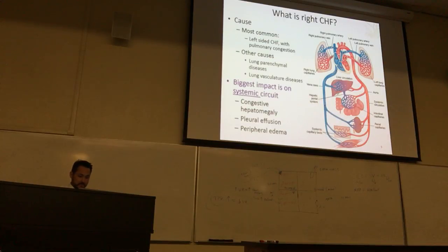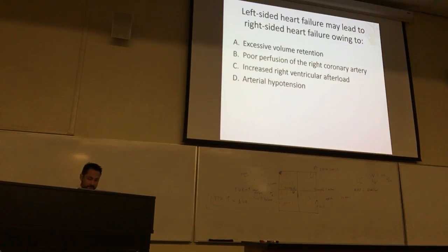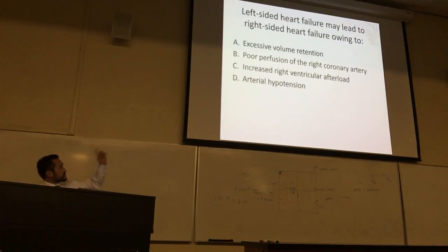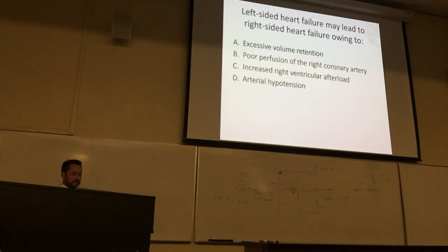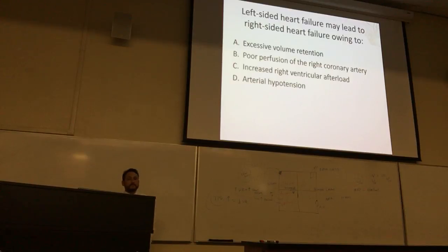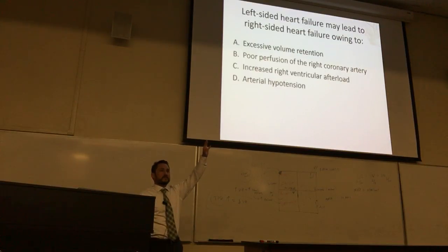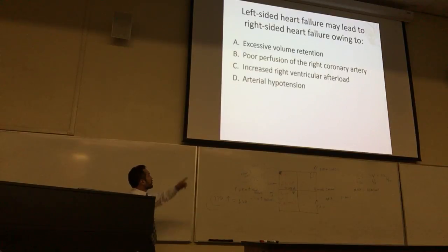Let's prepare for the final with a question: Left-sided heart failure may lead to right-sided heart failure owing to: A) excessive volume retention, B) poor perfusion of the right coronary, C) increased right ventricular afterload, or D) arterial hypotension. Which one? C — increased right ventricular afterload — absolutely correct. That's what we were talking about: it backs up from the left side and increases afterload on the right side.